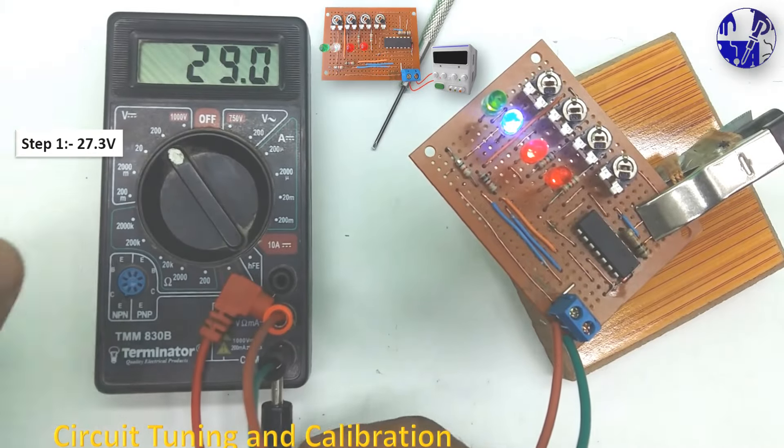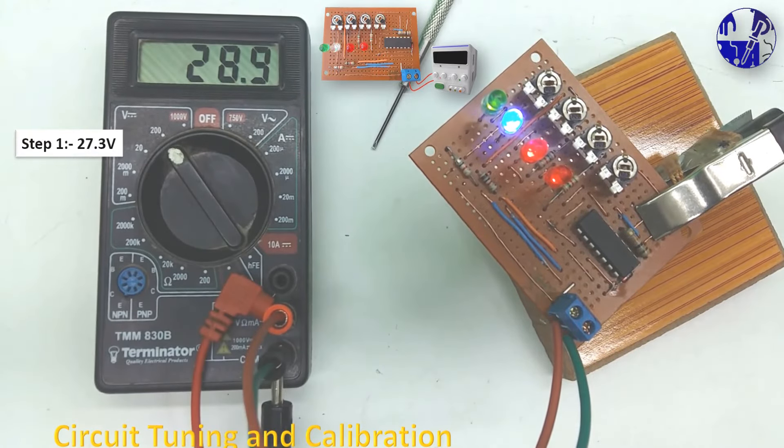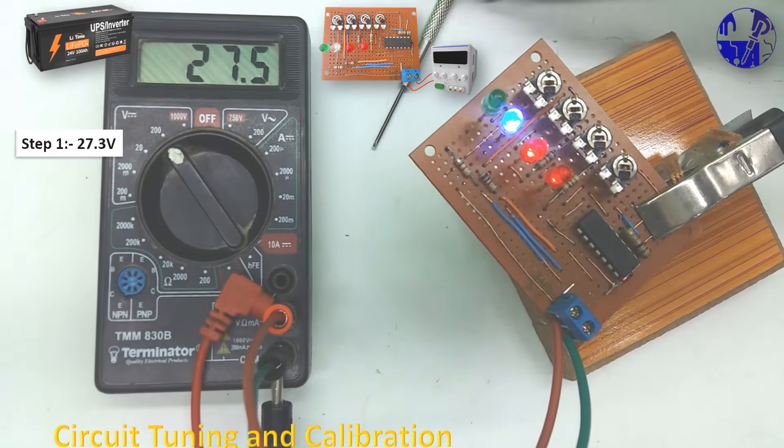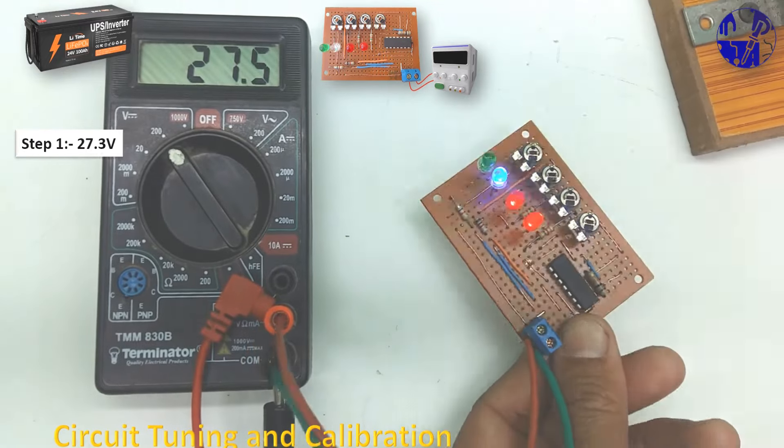Connect the variable power supply to the circuit and adjust the voltage to approximately 27.3 volts. This time we will calibrate the circuit for a 24-volt battery.